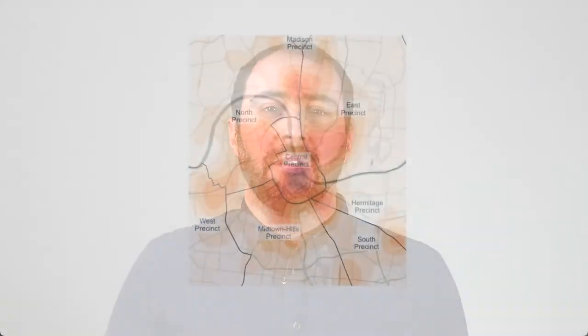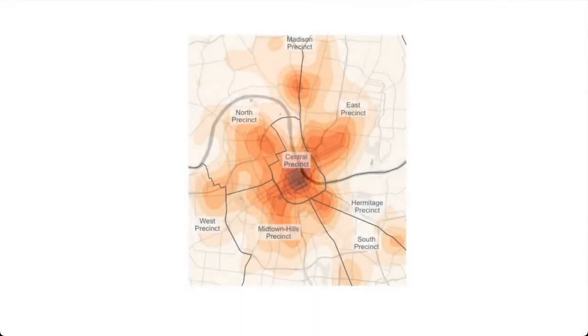We now know how to make effective crime maps. For example, like this density map of thefts of motor vehicles in Nashville, Tennessee. Now this is a good map, but it's missing lots of contextual information that will be useful for readers.